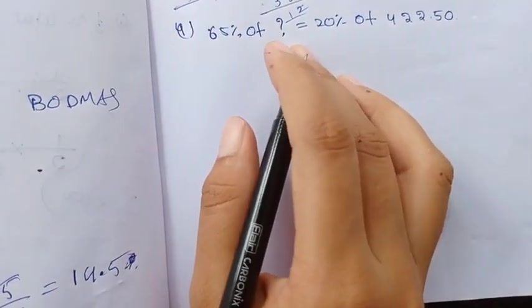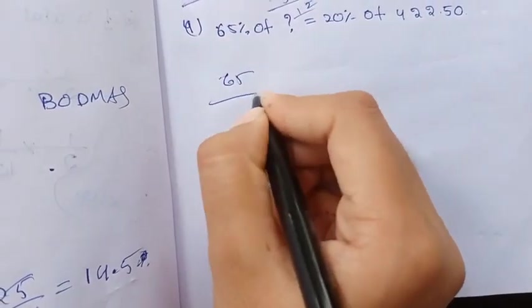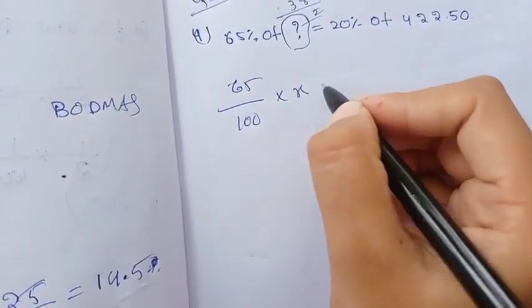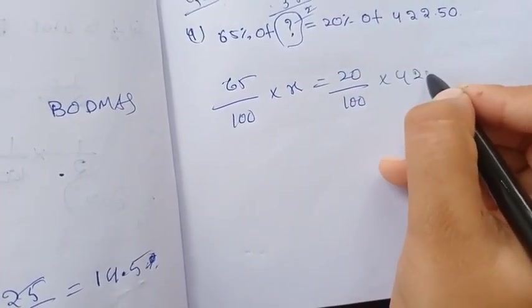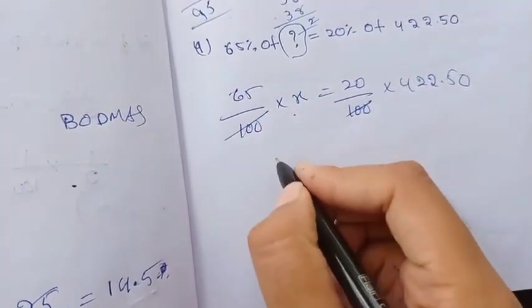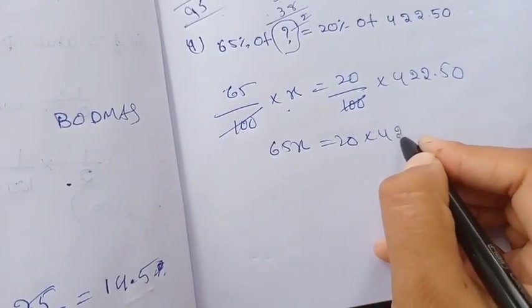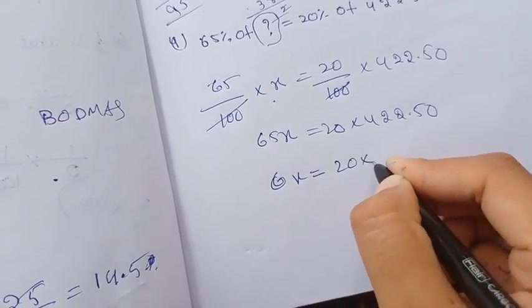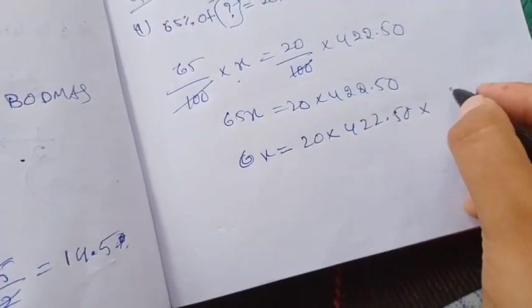Next problem: 65% of question mark equals 20% of 42,250. So 65% of x equals 20% of 42,250. This means 65x divided by 100 equals 20 into 42,250 divided by 100. So x equals 20 into 42,250 divided by 65.